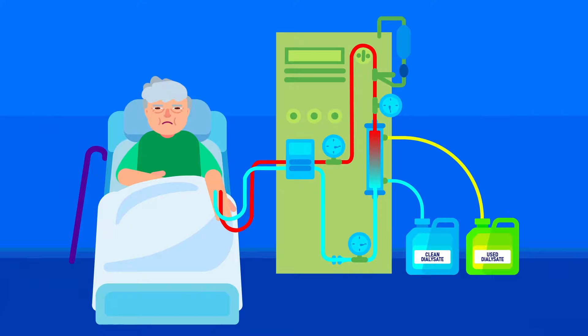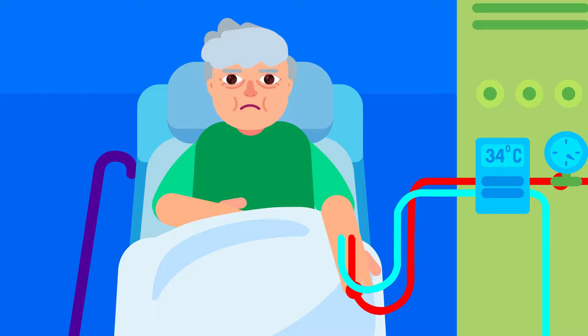The dialysis machine contains the following parts: a steel tub with a filter filled with a warm fluid set at 37 degrees Celsius to suit the patient's body temperature.